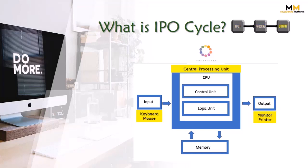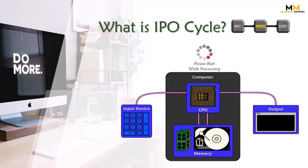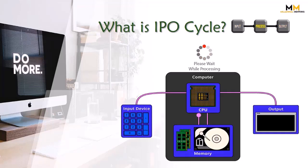Simply, the input-process-output cycle is used in computers. The data received by the computer is called input. After receiving the data, it processes it, stores it, and generates the output. That's all about the IPO cycle.